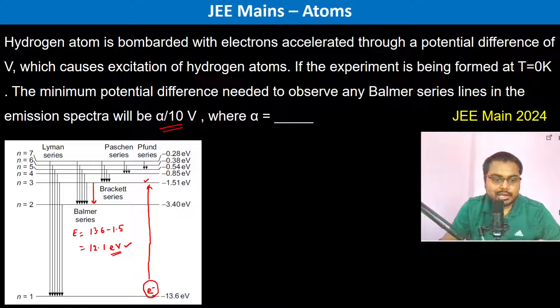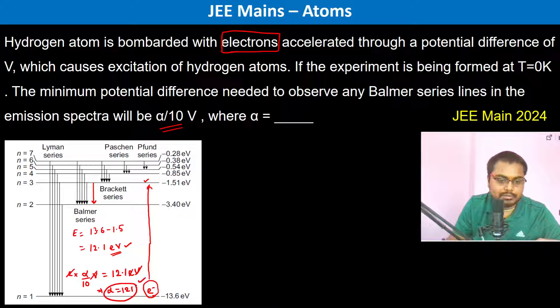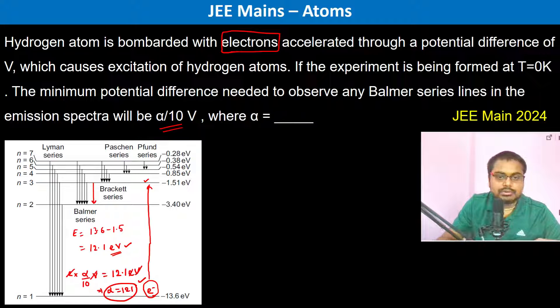Now the potential difference is given as alpha by 10 electron volts. So therefore we can write that the bombarded electron is possessing e into V energy. So e into alpha by 10 volts should be equal to 12.1 electron volts. Therefore, alpha is equal to 121.